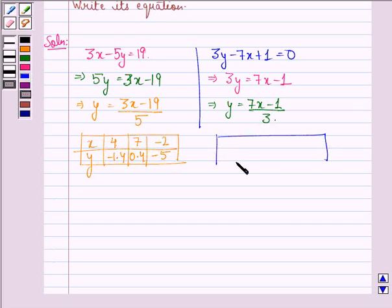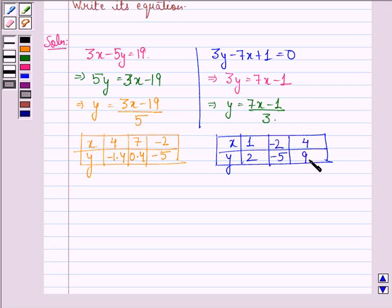For this line, the 3 points lying on this line are when x is 1, y is 2. When x is minus 2, y is minus 5. When x is 4, y is 9.